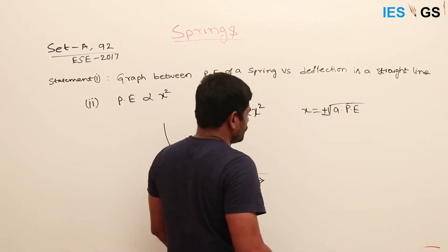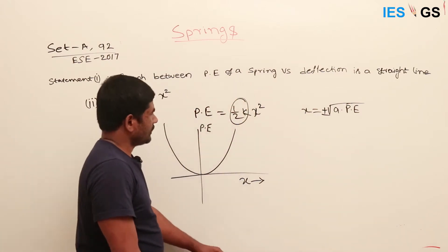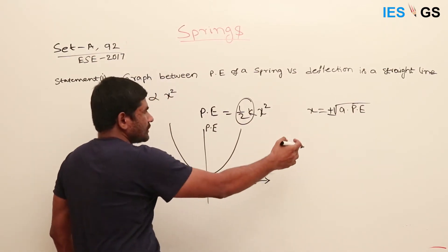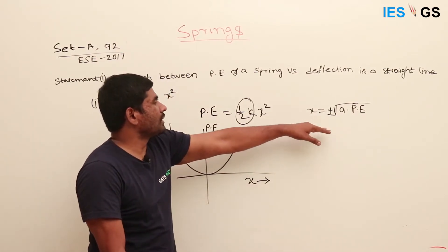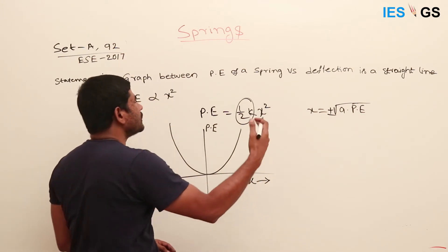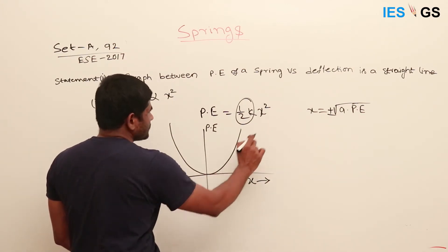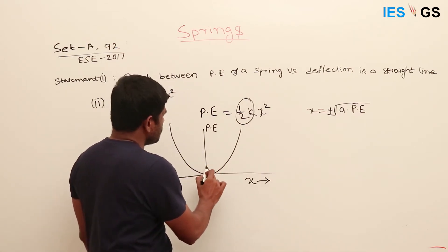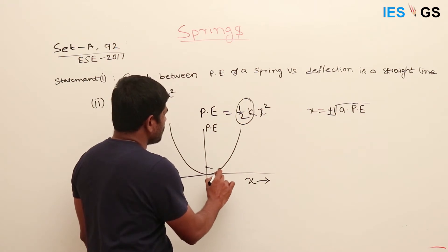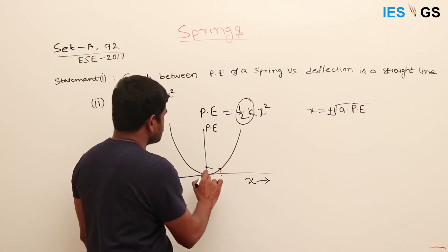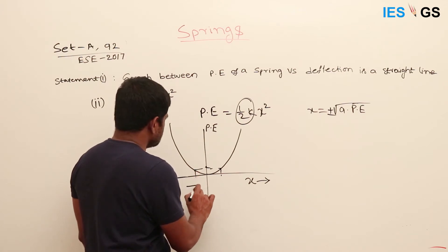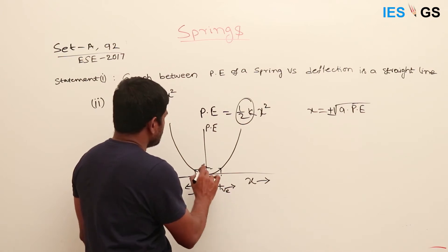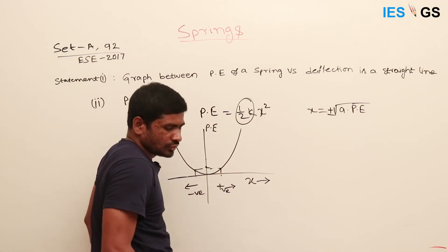This gives X as plus or minus some value. For example, if I substitute PE = 1, I get both a positive and a negative value on the X axis — say +1.1 and -1.1 — showing the graph is symmetric about the PE axis.